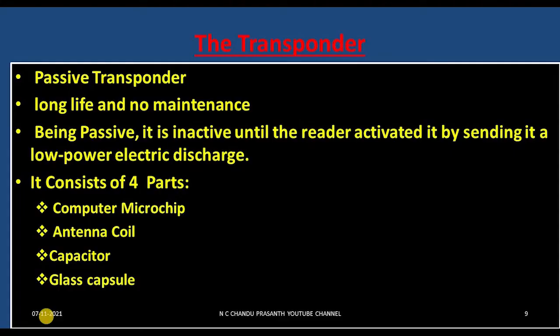The transponder is the main component in the biochip. It is a passive transponder, meaning it does not require any battery or energy. It has a very long life and no maintenance. Being passive, it is inactive until the reader activates it by sending a low power electric discharge.